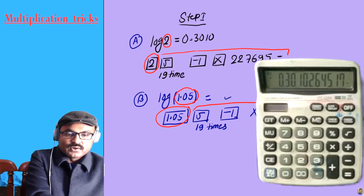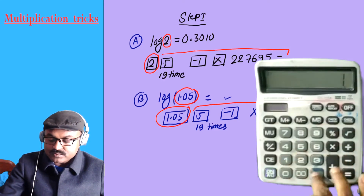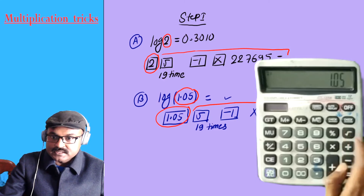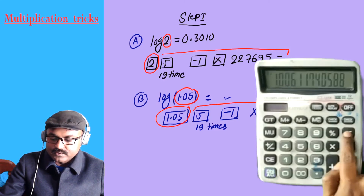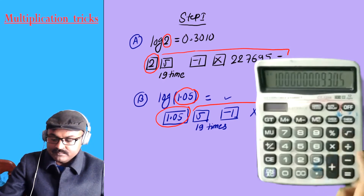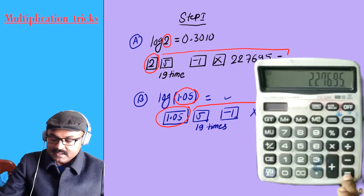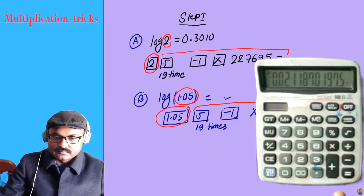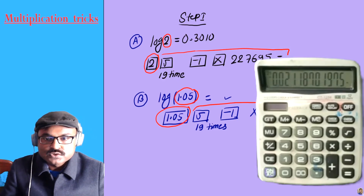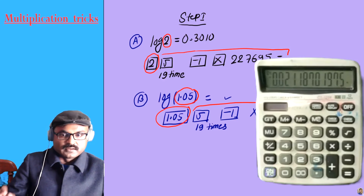Log 1.05. Log 1.05 into 227695, equal to. The value is 0.02118.